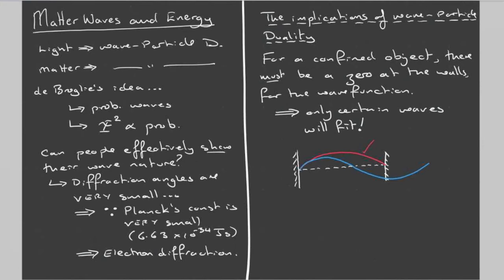If a wave has a zero on the left but not on the right wall, then when I square that function to get the probability, there's a non-zero probability at the right wall — meaning it's not acting as a confining wall. The main point is that only certain waves, or wavelengths, fit between the confining walls.